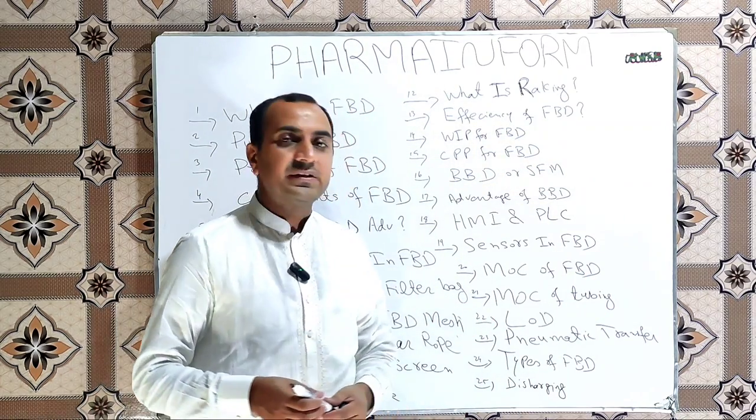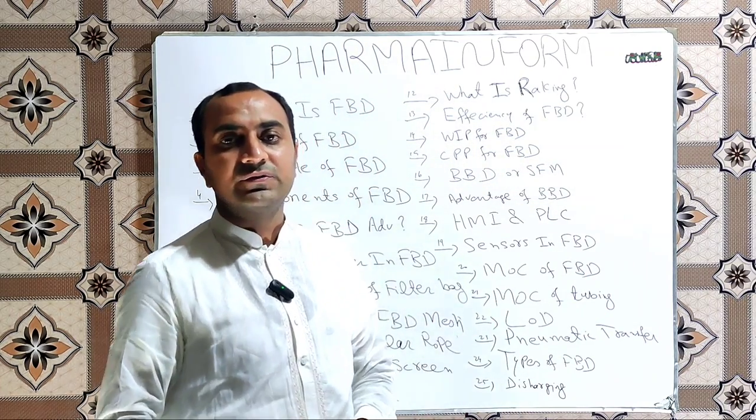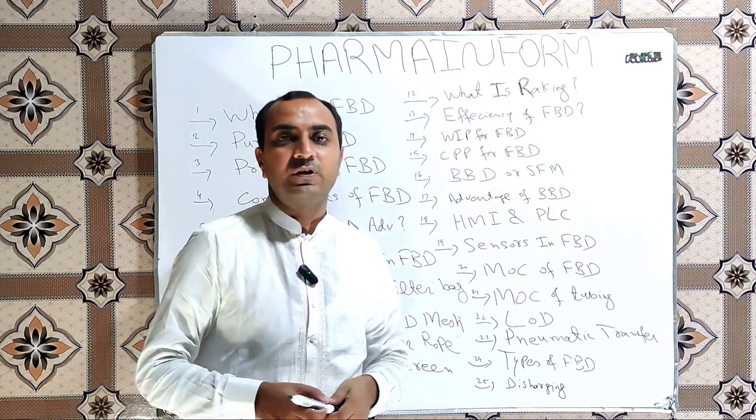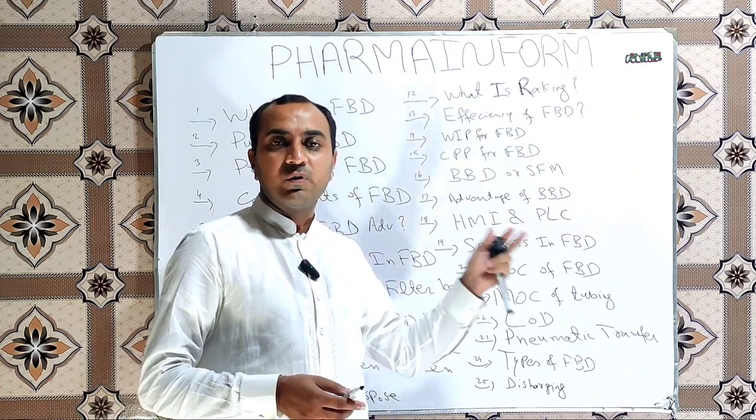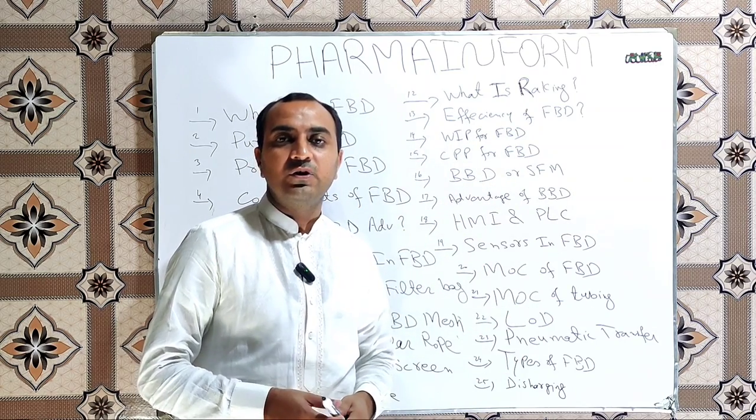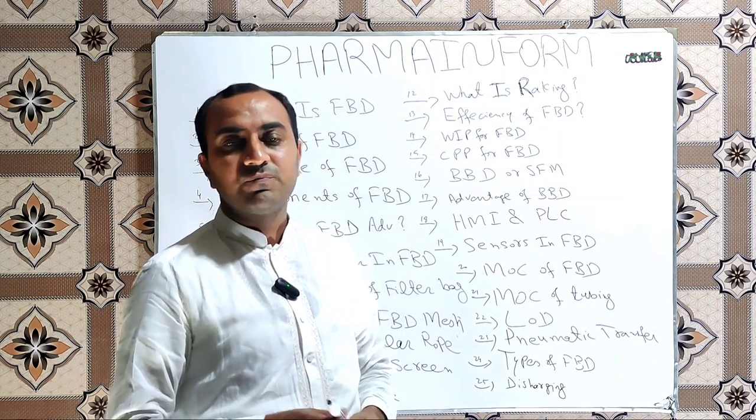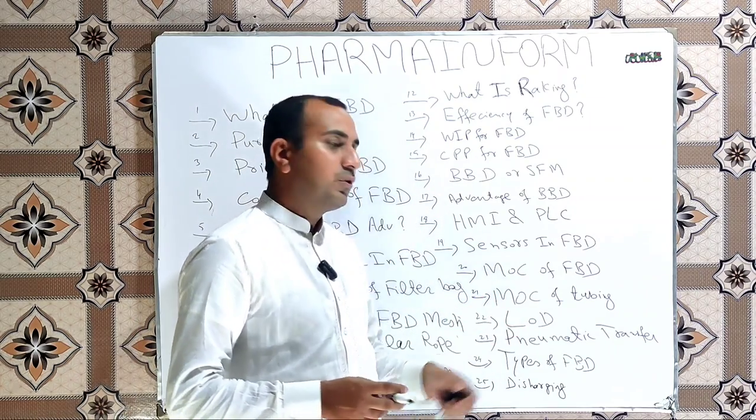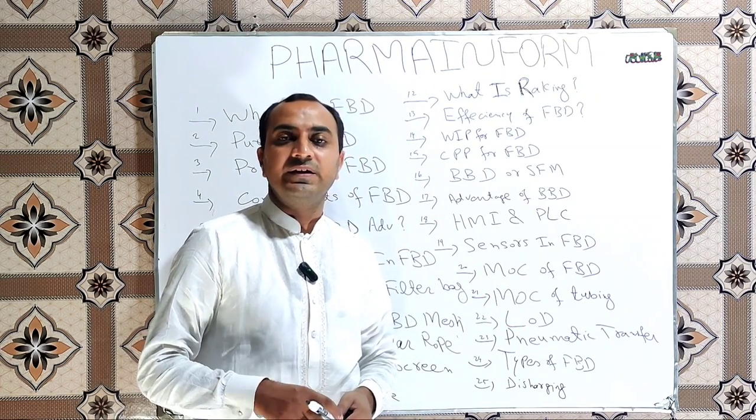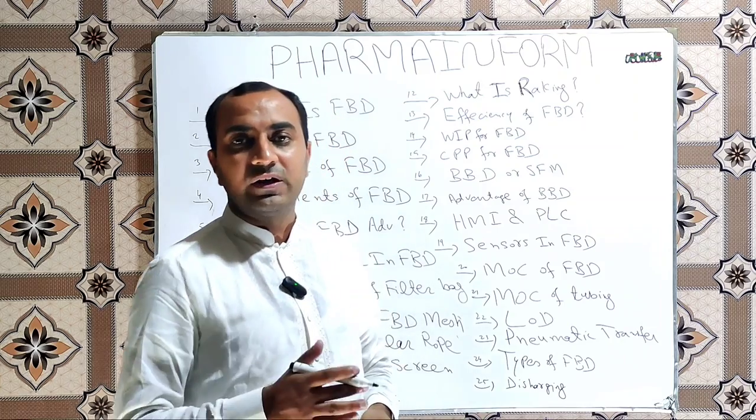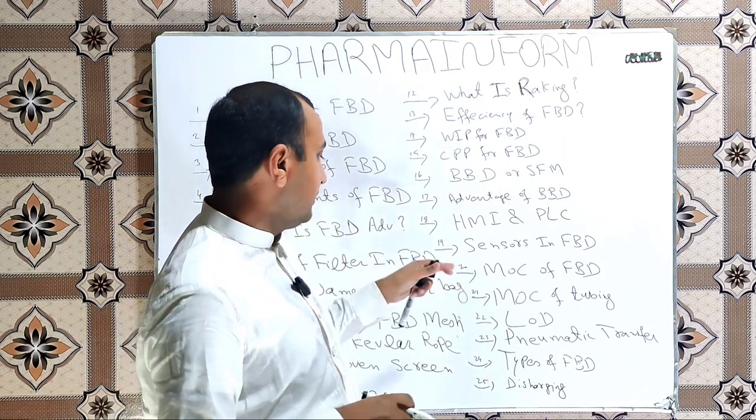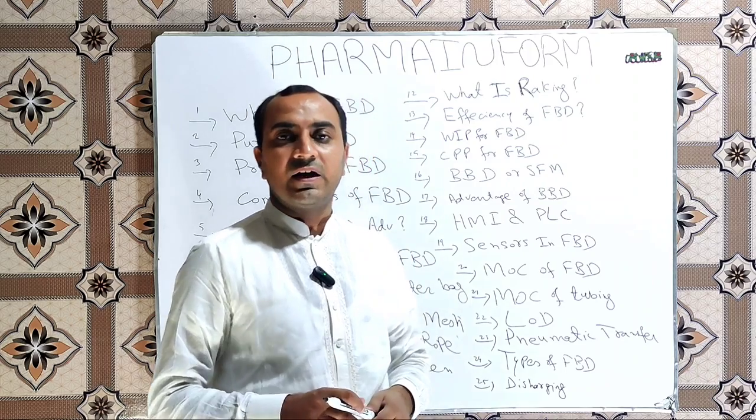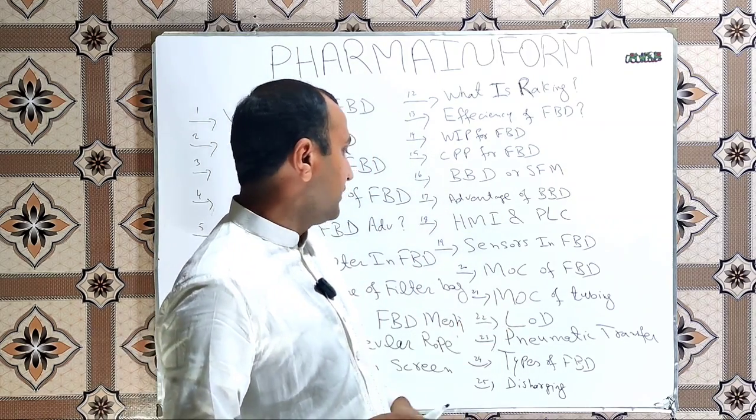Next one is what is LOD. LOD is loss on drying. LOD is also a critical process parameter for FBD. How can we measure LOD? LOD is measured by using moisture analyzer. LOD is also an indicator for the end point of drying. Whenever desired level of LOD is achieved, it indicates that our product is dried.